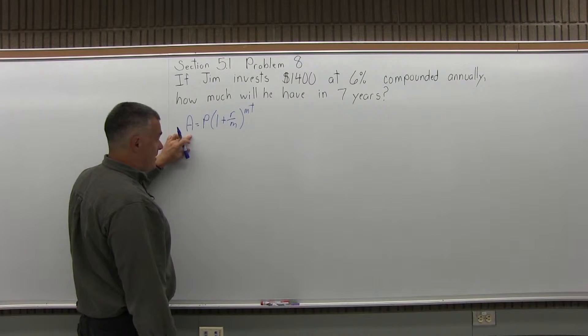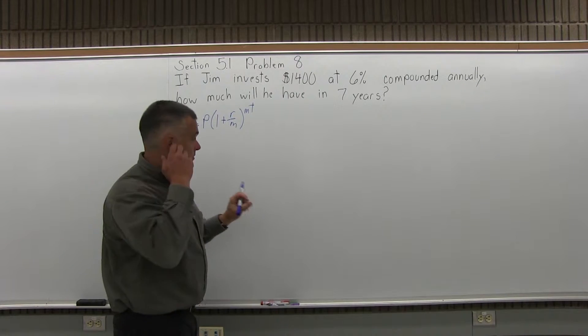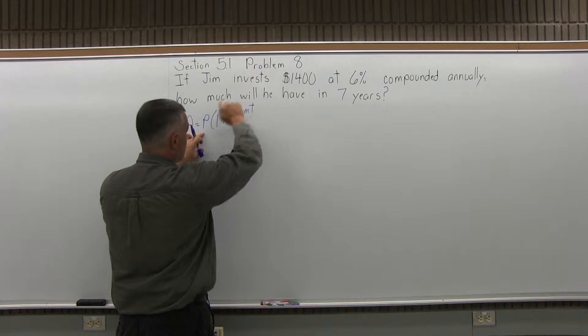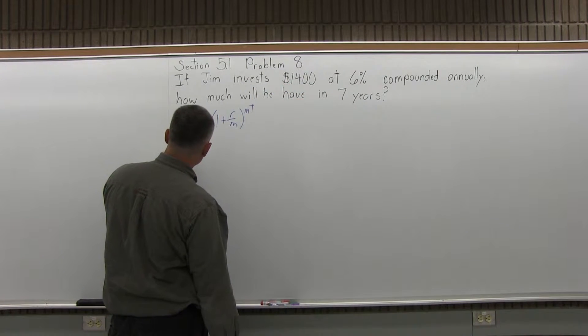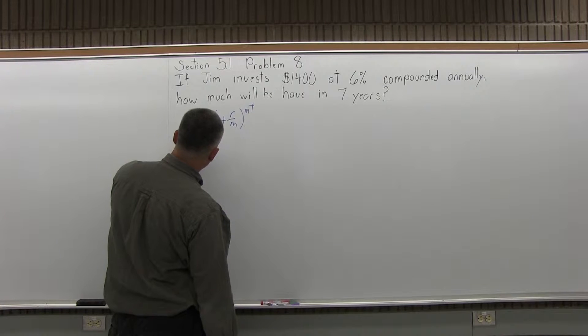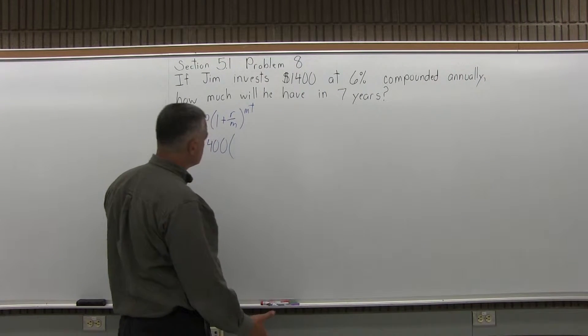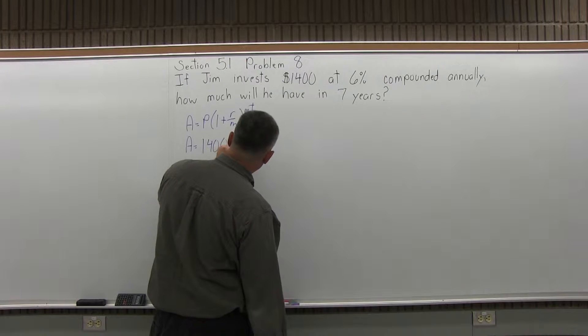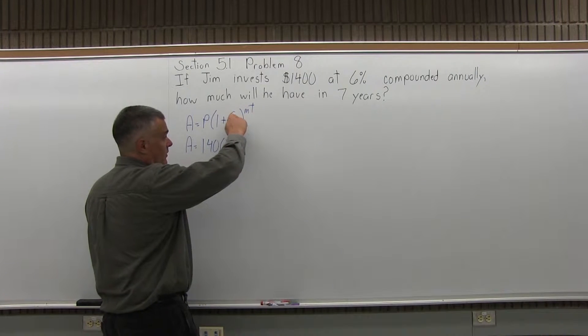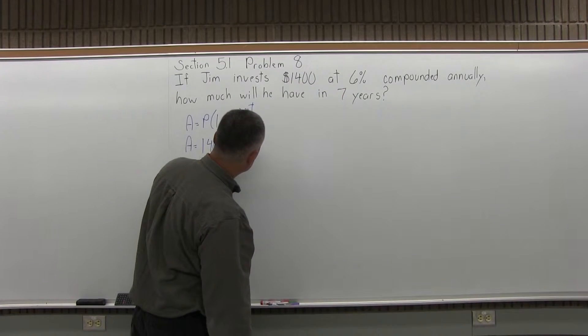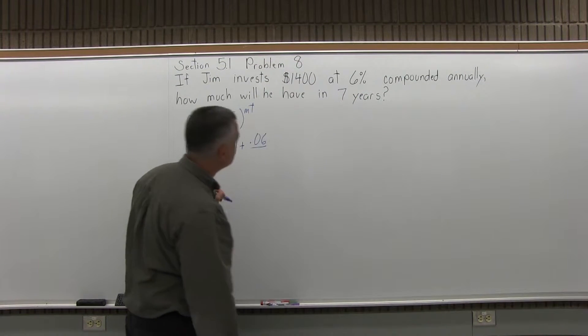A is the final amount. We don't know what the final amount is, so that will stay our variable. The 1,400 is what is invested now. That's P, the initial investment or principle. As I fill in the formula, I get A equals P is 1,400 times the parentheses, and in parentheses I have 1 plus R is for rate as a decimal. This problem says 6%, so as a decimal, 6% is 0.06. Remember, it has to be as a decimal.